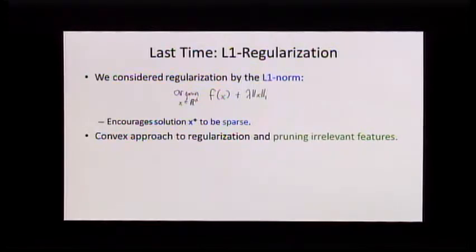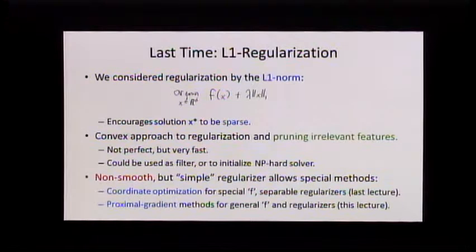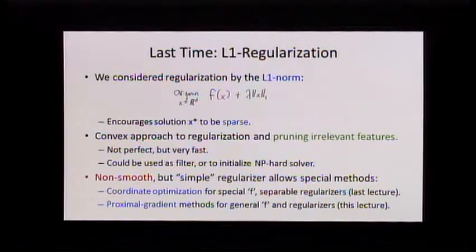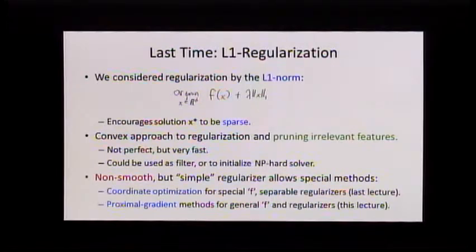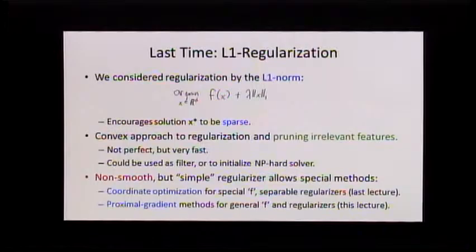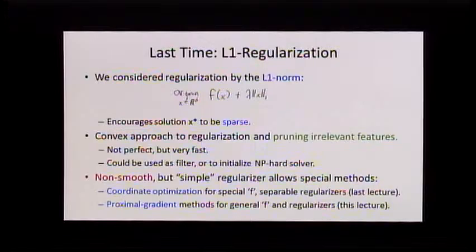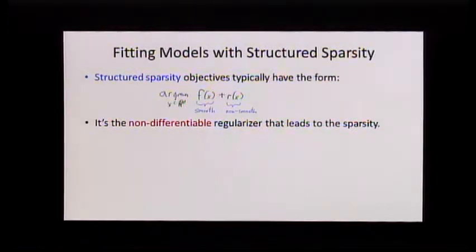L1 is very fast — you solve one problem and get a sparse set of variables instead of solving a problem over and over for different variable sets. It's non-smooth, but it's a simple regularizer that lets you use special methods. In the morning we talked about coordinate optimization for special functions that let you update coordinates cheaply with separable regularizers. Now I want to talk about proximal gradient methods. These allow general differentiable F and general simple regularizers — we don't need the separable assumption, because a lot of the structured sparsity things I just talked about are not separable.